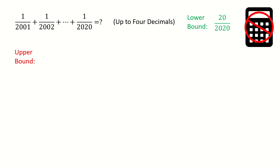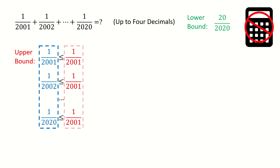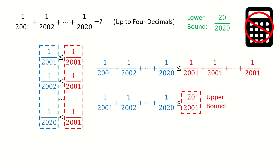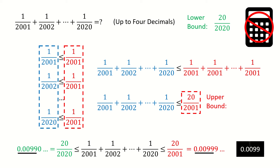Next, let's find the upper bound. So 1 over 2001 is less or equal to itself, and 1 over 2002 is less or equal to 1 over 2001, and keep going until 1 over 2020 is less or equal to 1 over 2001. So the sum of the left-hand side is less or equal to the sum of the right-hand side, and we got the upper bound equal to 20 over 2001. So we can put this expression between the lower and upper bound. After some calculation, we can write these two fractions as decimal forms, and up to 4 decimal places precision, the answer is 0.0099.